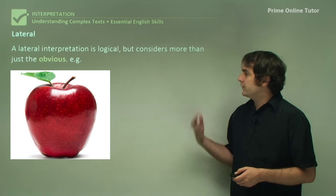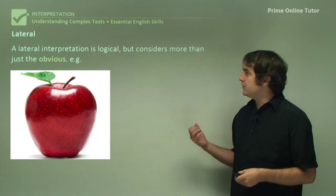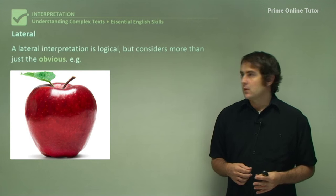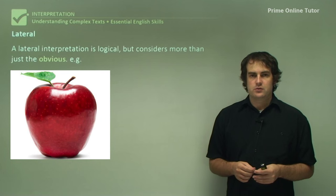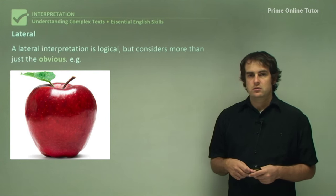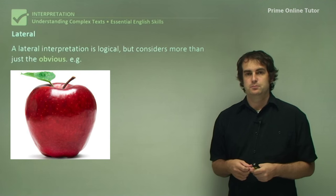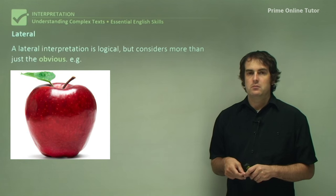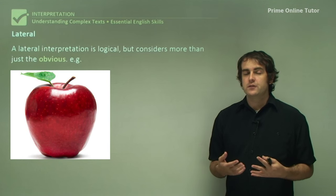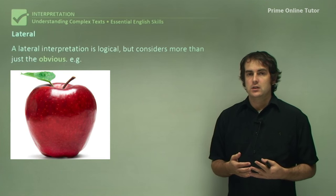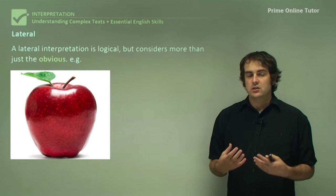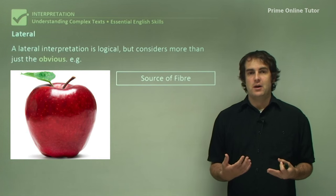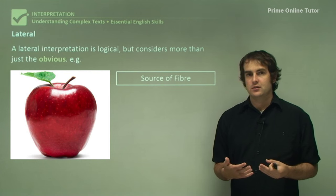Let's move on to the lateral. A lateral interpretation is still logical. We're not going down any different paths here, but it considers more than just the obvious option. So if you look at this image, you immediately go, well that's an apple. Yes, it is. But it can also be other things, and it can be other things that you can state quite logically. First of all, it's a source of fiber if you're someone who's a nutritionist. It's a product.